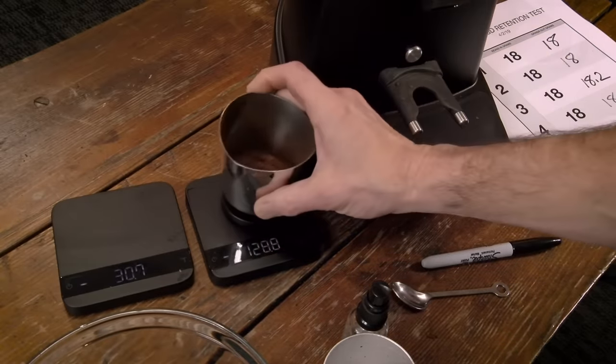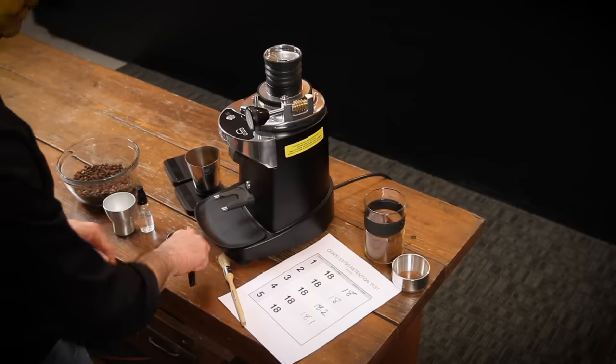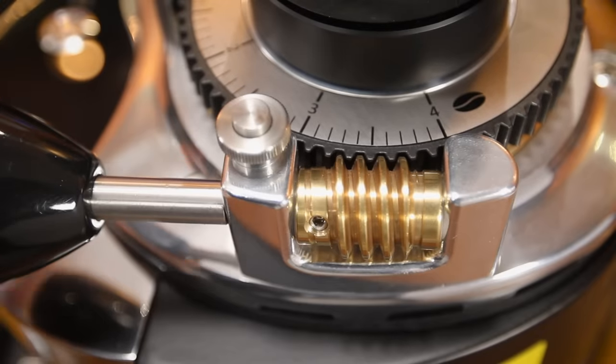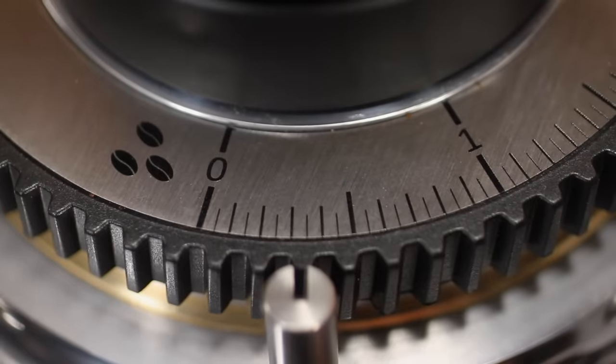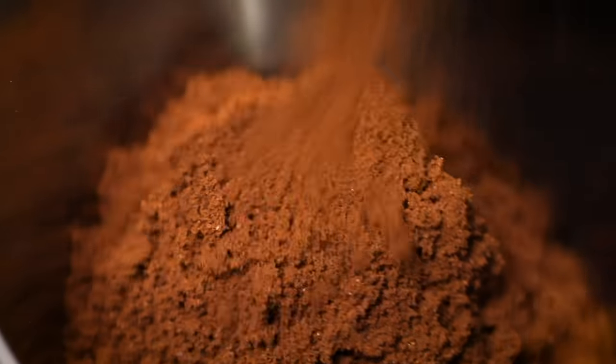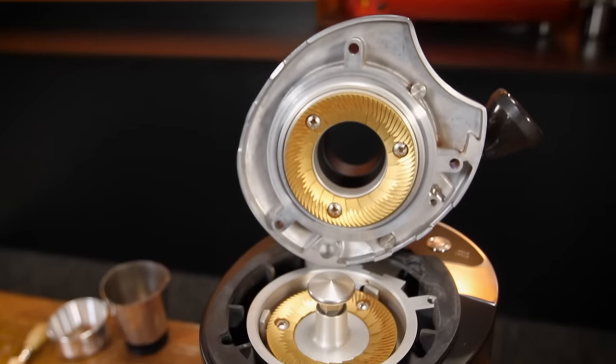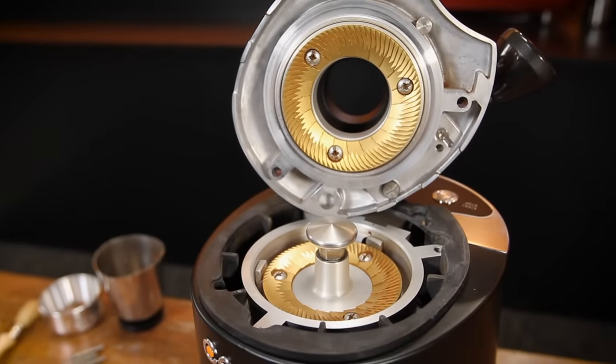If you're into or considering single dosing the Chiato E37 SD is a fine piece of equipment. It features those super precise worm gear adjustments, essentially zero retention, and beautiful fluffy grinds from huge 83 millimeter titanium burrs that for most users will grind a lifetime of coffee.